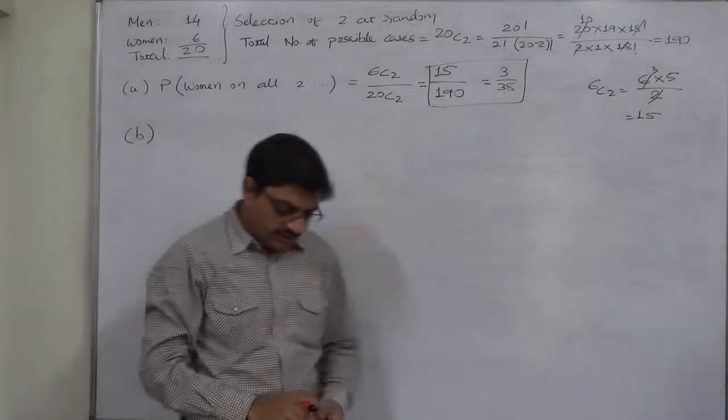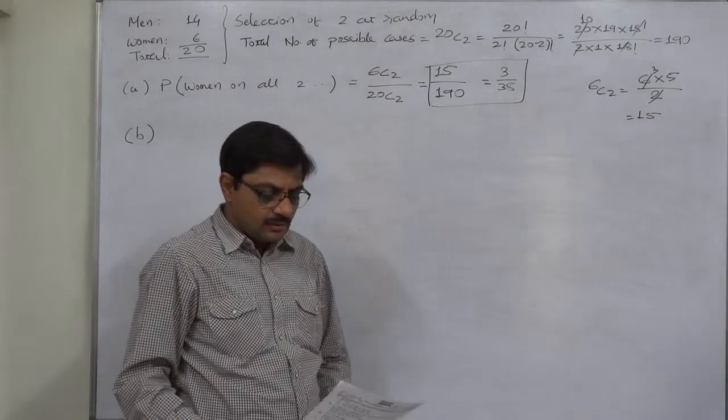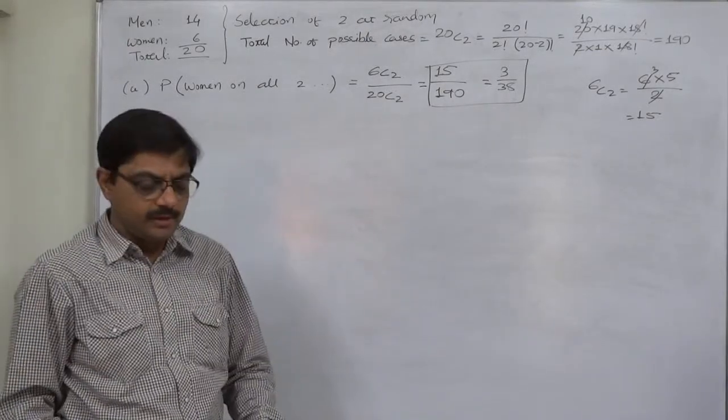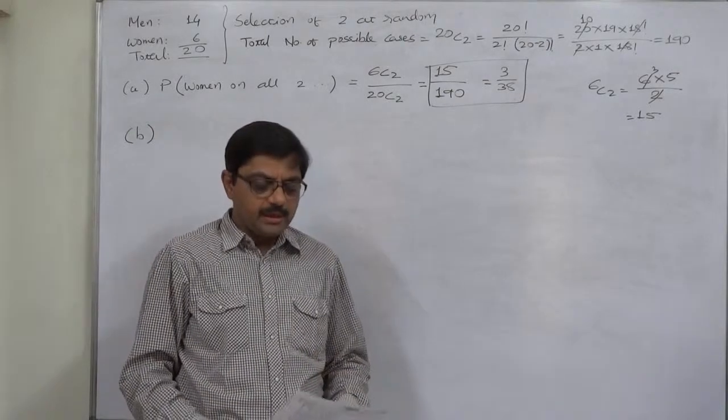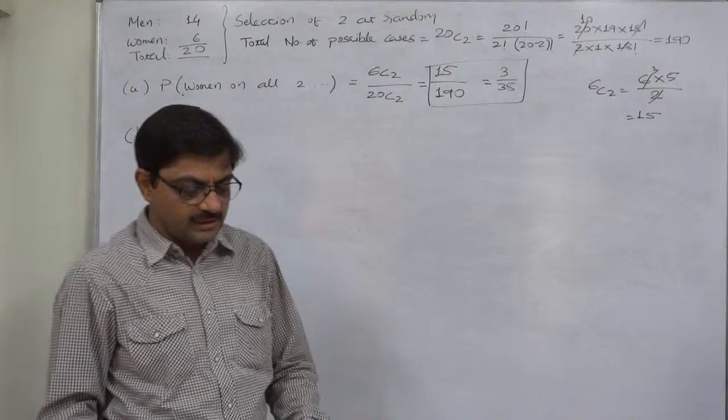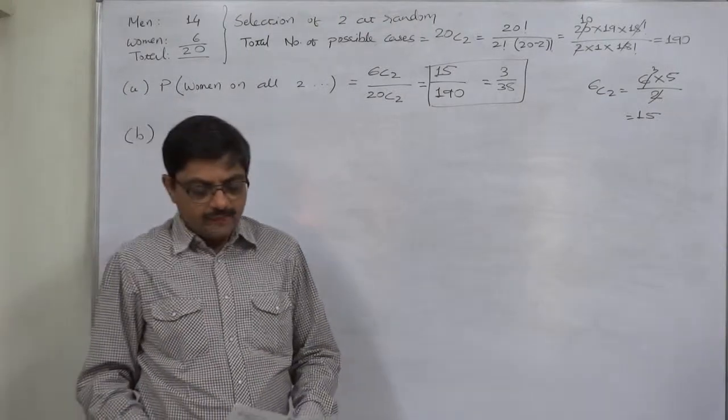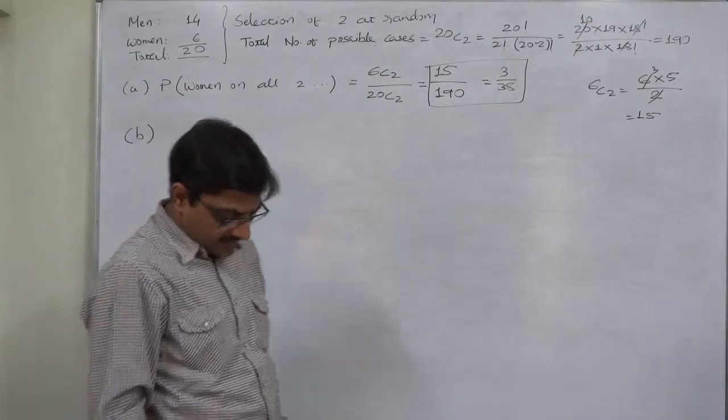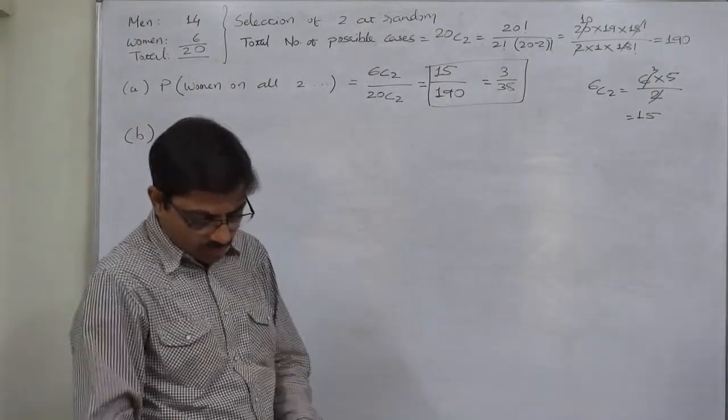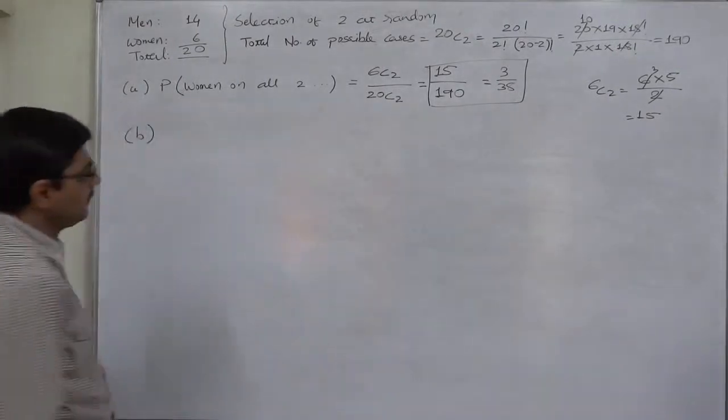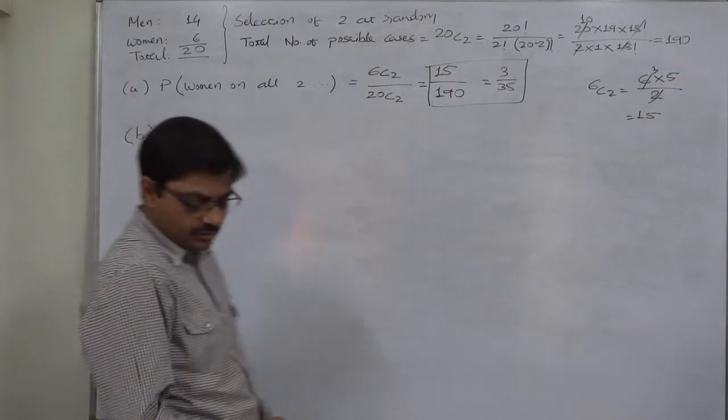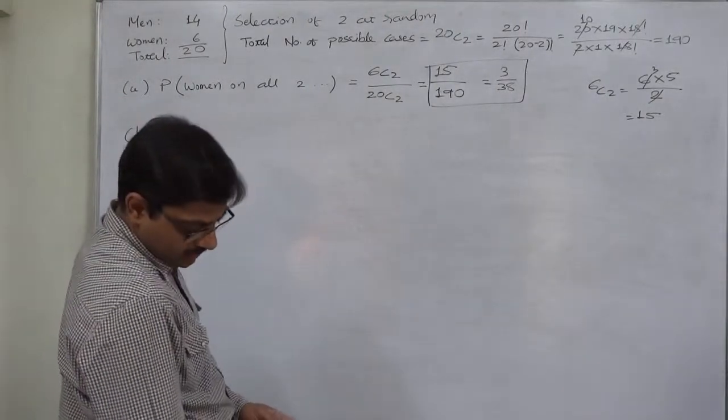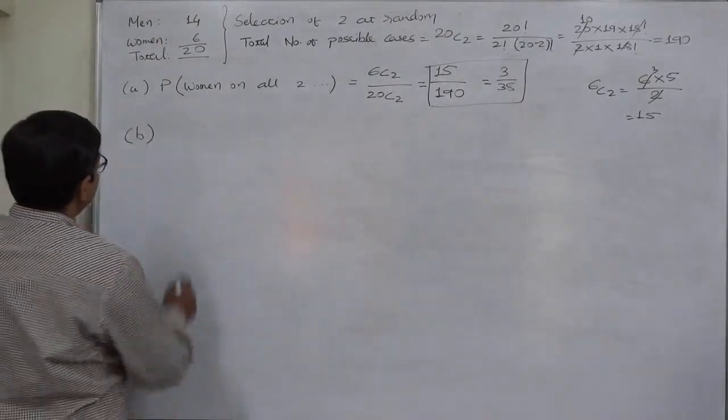The second sub-question is at least woman will fill one of the positions, or at least one position is filled by woman. But I will prefer to get the answer of the third question first. Woman will fill neither of the positions. That means no woman is selected out of 6. Okay, I am not going to change the order. Let us calculate the probability there. At least woman will fill one of the positions.